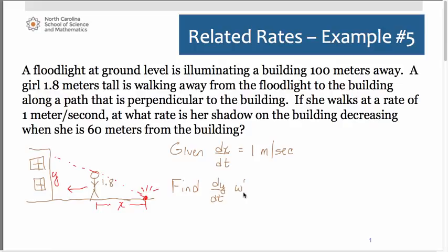And we're trying to figure that out at the point in time when she is 60 meters from the building. Now the other thing that we've neglected to put in here is that we know that the spotlight is 100 meters from the building. And that's a fixed distance. So if we're trying to figure out the rate at which her shadow is decreasing when she is 60 meters from the building, well that means the X has to be 40. So hopefully that makes sense to you.